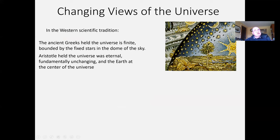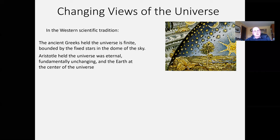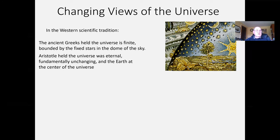I want to focus on our Western scientific tradition, which means the tradition of the Egyptians, Babylonians, Greeks, Romans, the great Muslim culture of the 10th through 12th centuries, moving through Europe and the Renaissance and the scientific revolution. The key start would be the ancient Greeks, who held the universe was bounded by the dome of the sky. Aristotle felt the universe was eternal, fundamentally unchanging, and of course the Earth was at the center.